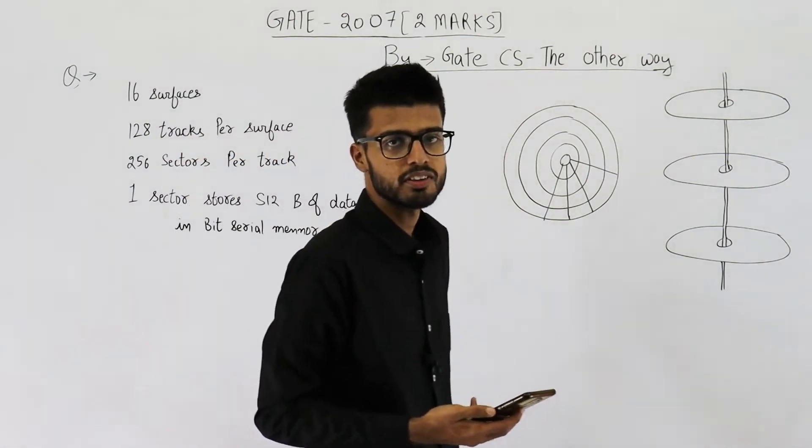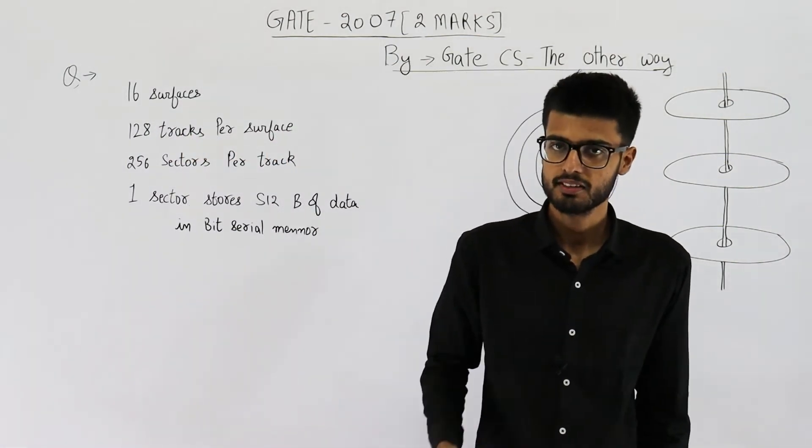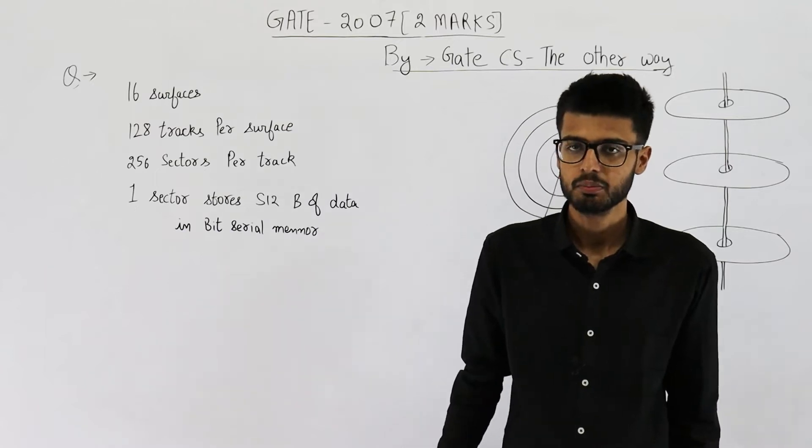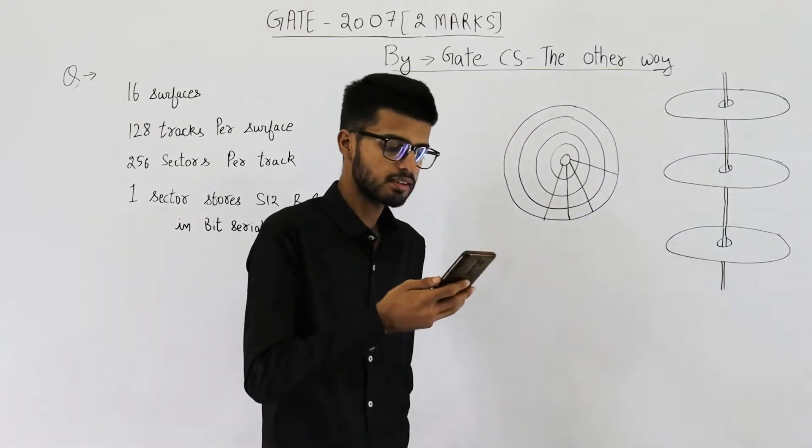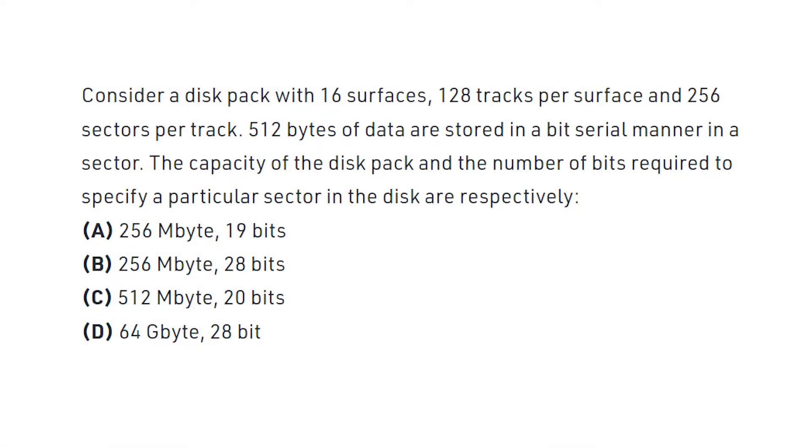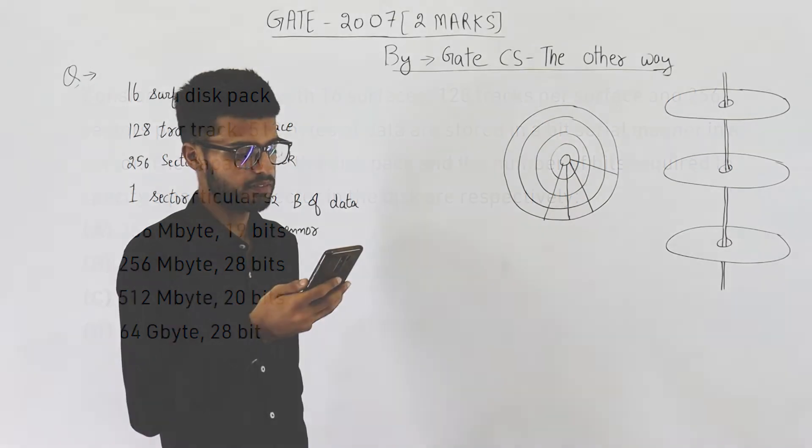Hello dear students, this question is again from the 2007 exam. So let me read out the statement, then we'll solve it. Consider a disk pack with 16 surfaces, 128 tracks per surface, and 256 sectors per track. 512 bytes of data are stored in bit serial manner in a sector. The capacity of the disk pack and the number of bits required to specify a particular sector in the disk are respectively...